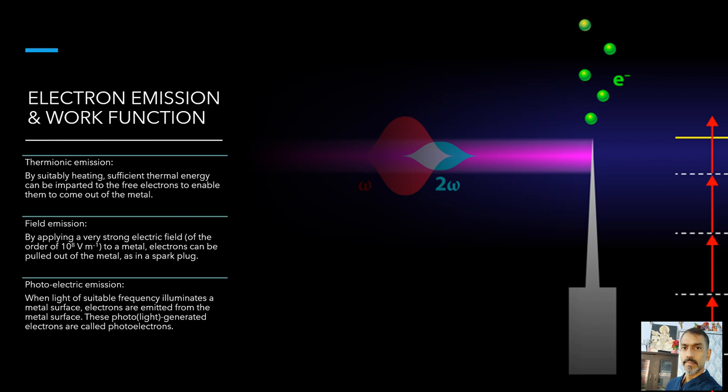A certain minimum amount of energy is required to be given to an electron to pull it out from the surface of the metal. This minimum energy required by an electron to escape from the metal surface is called the work function of the metal.